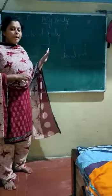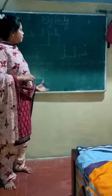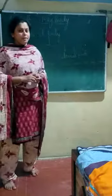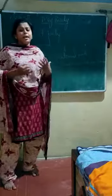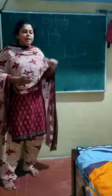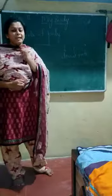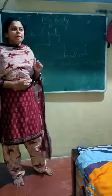Welcome back, children. We have already discussed the internal body parts in the last video. Now let us discuss the external body parts — the parts which can be seen outside very easily. These include hands, legs, shoulders, head, eyes, nose, ears, teeth, and tongue.